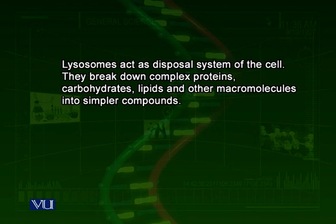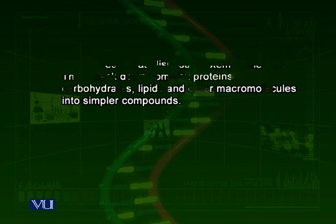Whenever anything needs to be broken down in the cell, it is placed temporarily in a vacuole. Lysosomes fuse with these vacuoles, pour their enzymes inside, and those enzymes break down the waste materials, converting them into less harmful products which are then released out. So lysosomes are the disposal system of the cell, responsible for disposing of harmful materials including bacteria or viruses that invade the cell.